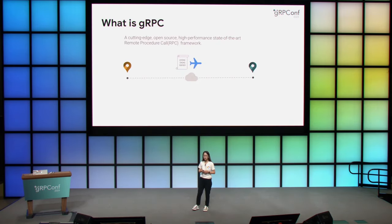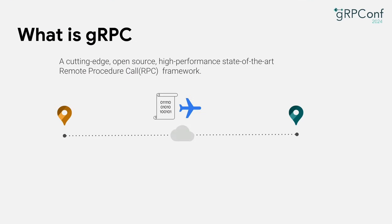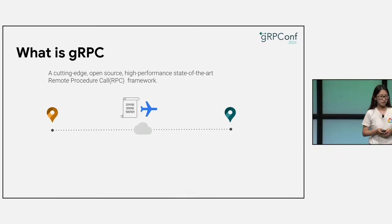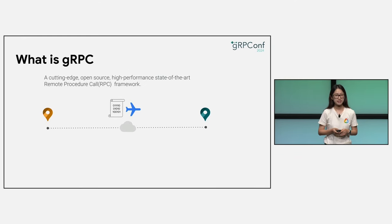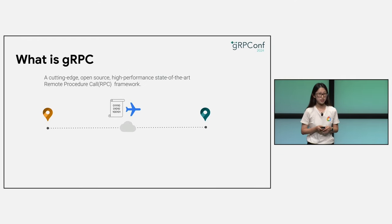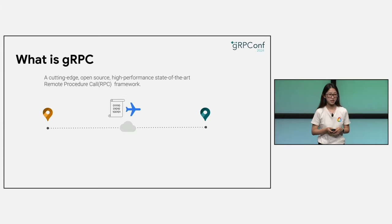First of all, gRPC is a cutting-edge, open source, and high-performance remote procedure call framework. It is the go-to standard in the industry. To put it in simpler terms, think of it as a super-fast flight service for your data — it is zipping your bits and bytes across the internet.